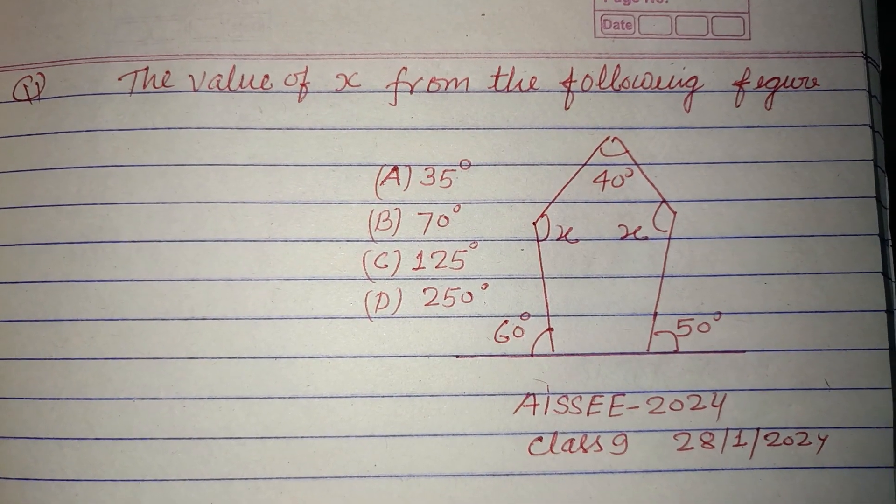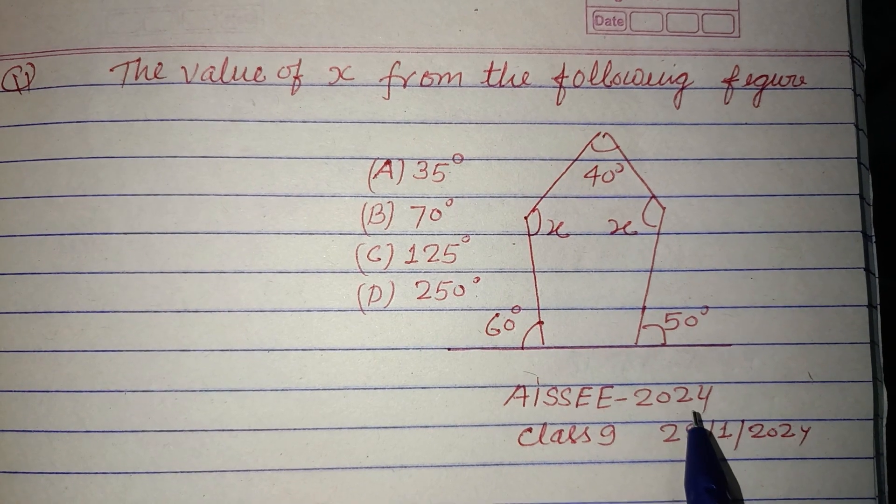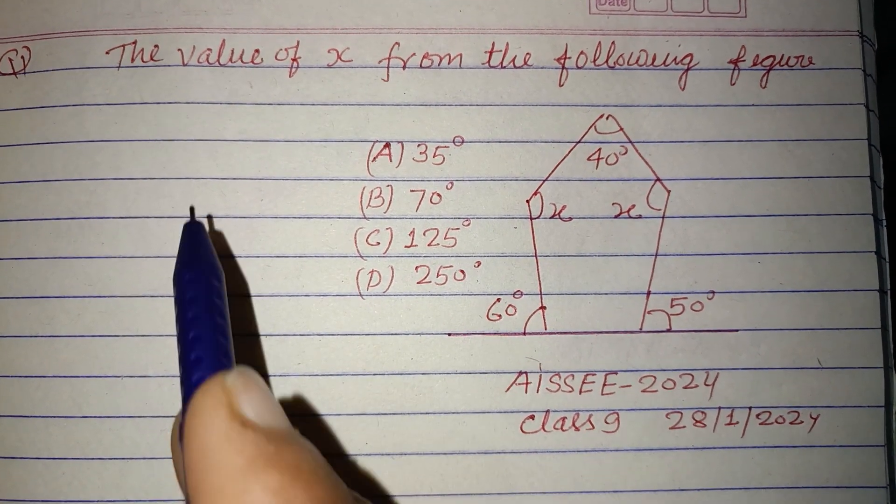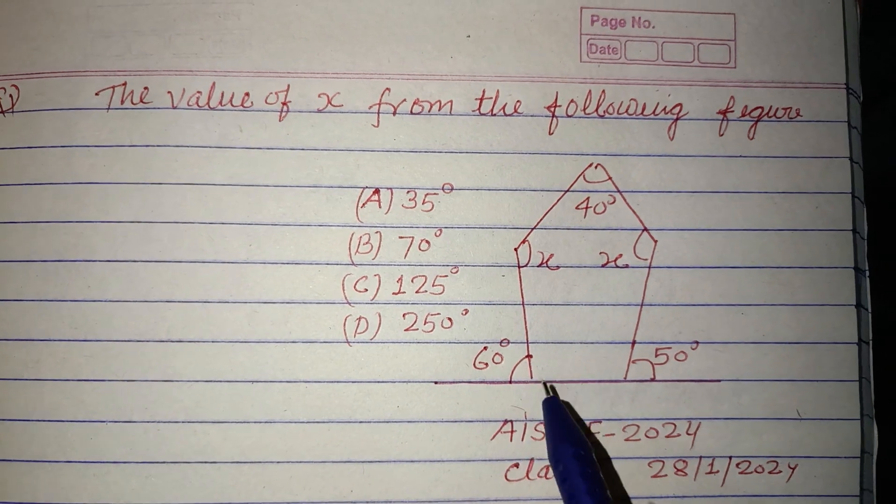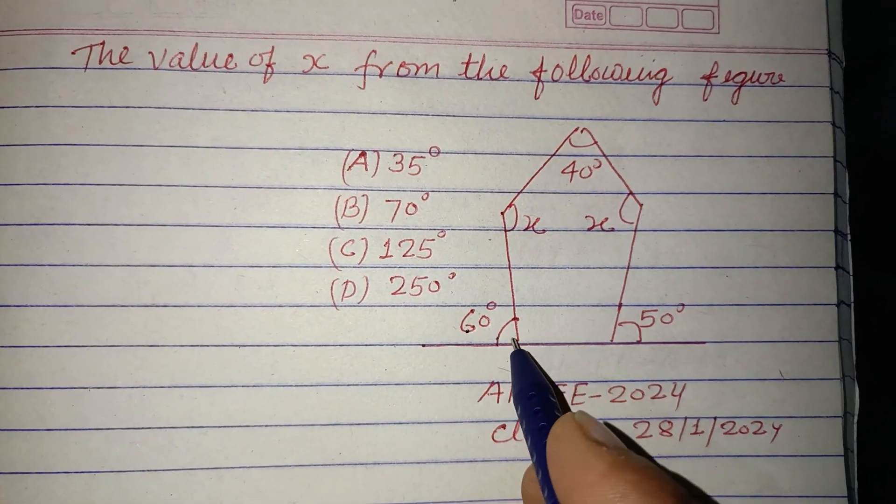Hello viewers, warm welcome to this YouTube channel. This is a question from All India Senior Secondary School Entrance Exam 2024, Class 9. The value of x from the following figure. Here, an angle of 60 degrees is given, and this is a linear pair.